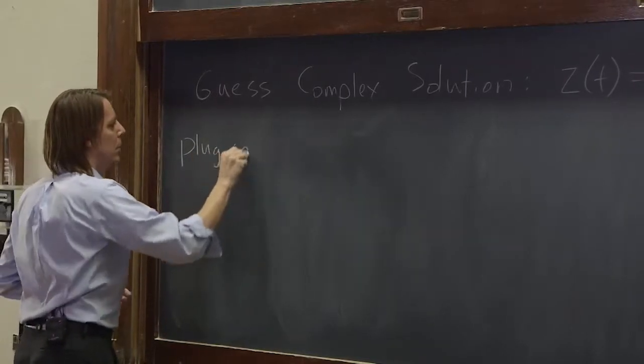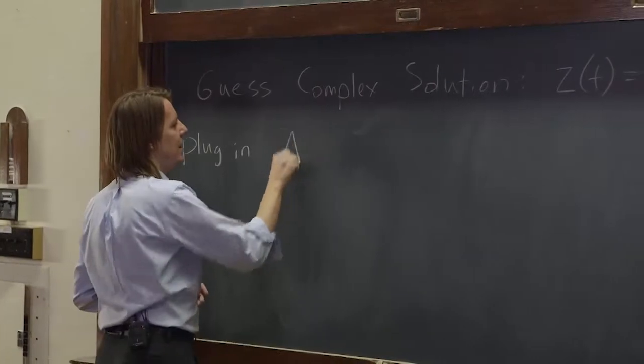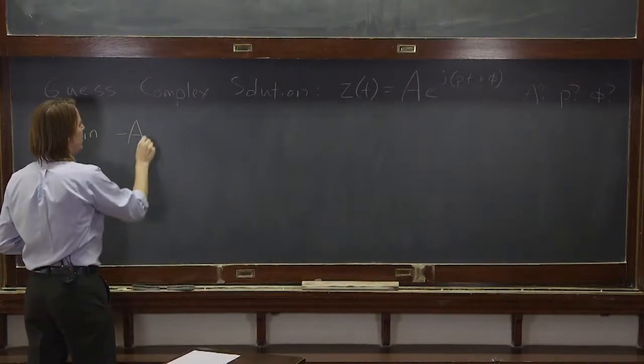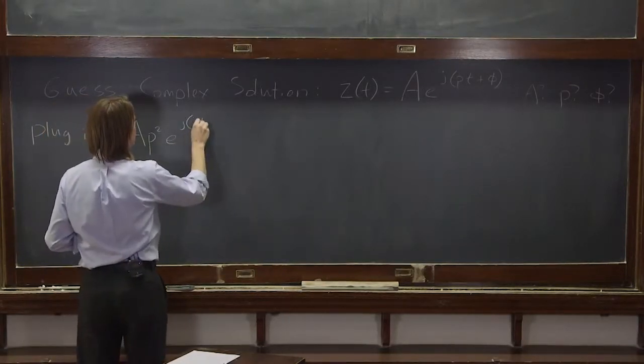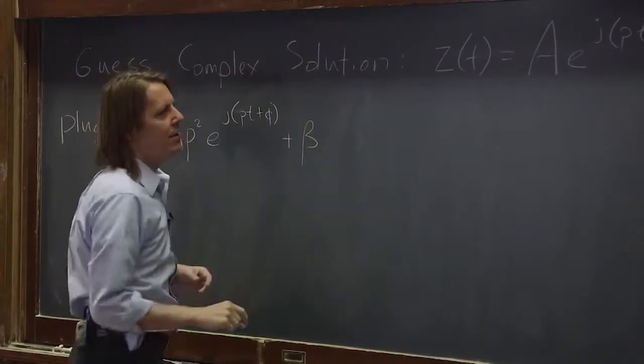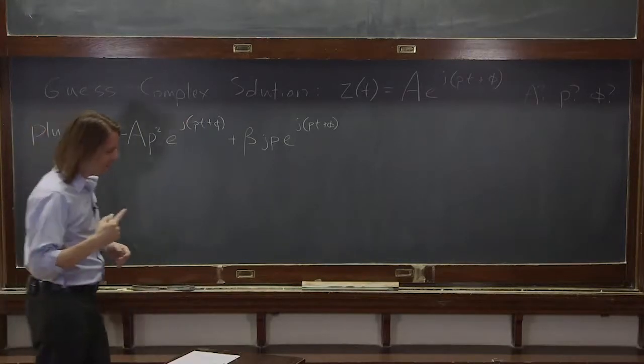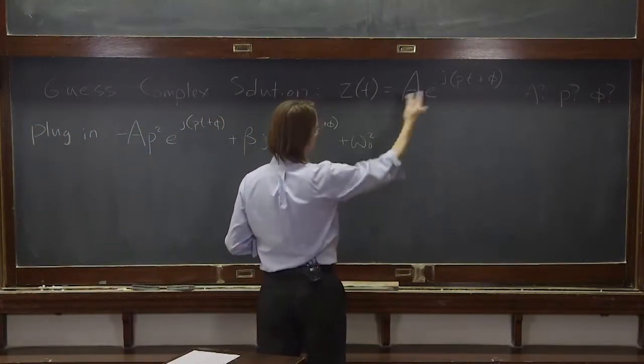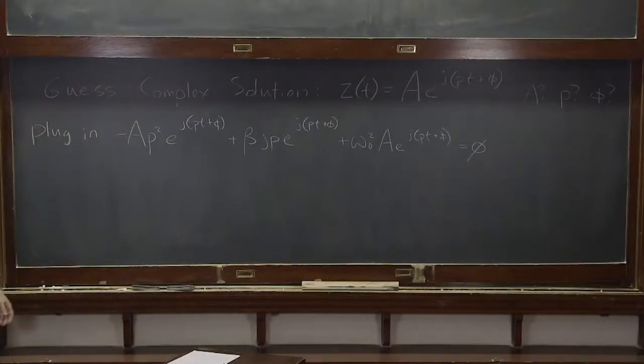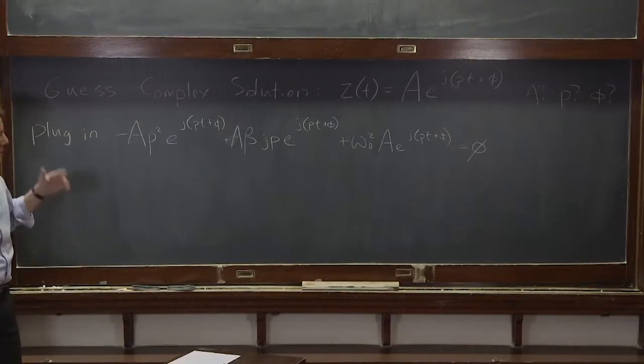So let's plug in that guess. The first term is x double dot, or in this case, z double dot. So if we take two derivatives, the A is along for the ride. We pull down two j p. So j squared, p squared. j squared becomes minus one, and we have p squared. And then we have e to the j p t plus phi. And then it's plus beta times x dot. One derivative brings down a j p, and then you're left with e to the j p t plus phi. And then plus omega naught squared times the function A e to the j p t plus phi. All that equals zero. How can that be true? Let's figure it out.